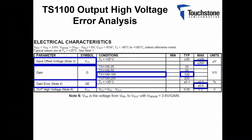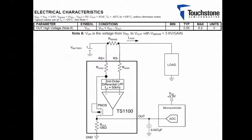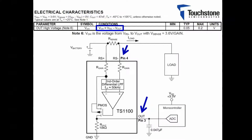The maximum gain error over the entire temperature range will be 0.6%. Lastly, the output high voltage. Before I begin the calculation, I would like to show how this parameter can be measured on a circuit. Here we have a typical application circuit for the TS-1100 CSA. As shown in the parameters conditioned from the EC table, the output high voltage can be obtained by measuring the voltage from the output at pin 3 to the load side of RS at pin 4.